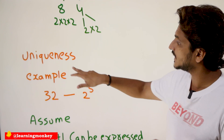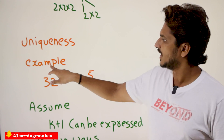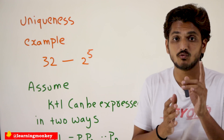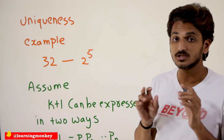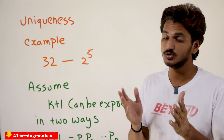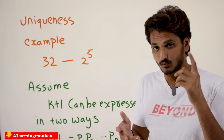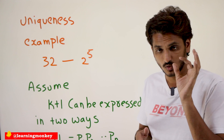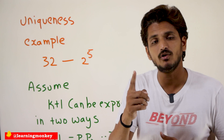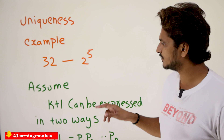That is the mathematical proof that you can take any number and express it as a product of prime numbers. The second part you need to understand is that we can express it in only one unique way. Uniqueness means — take 32 for example — 32 can be expressed only in one way, that is 2⁵. You cannot express it using 3 × 5 × some other prime numbers. There is only one way.